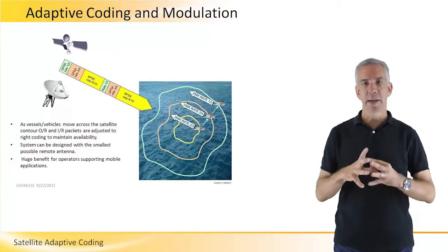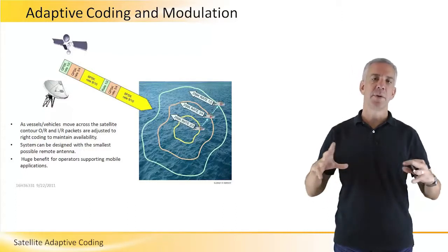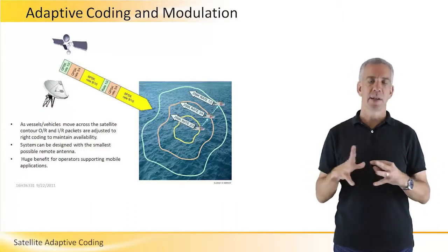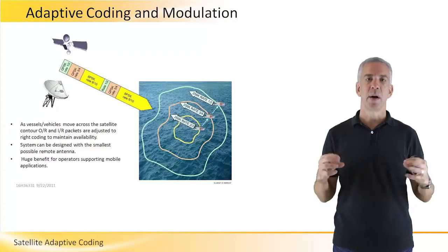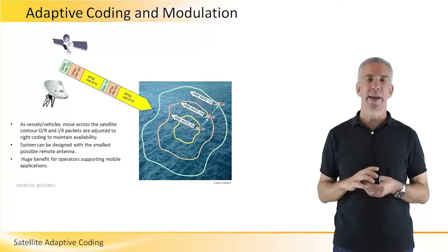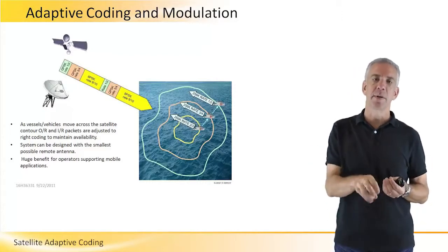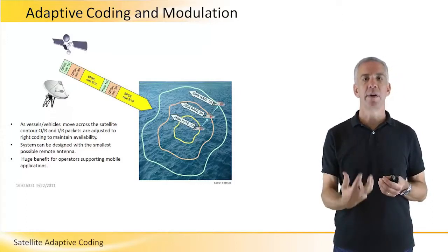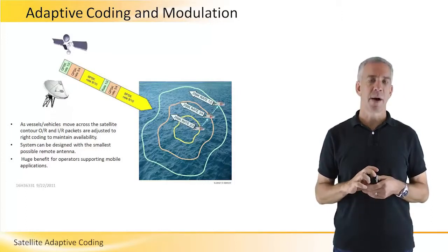This is important because if you consider the satellite footprint, it's much like any typical wireless communication system. In the center of the footprint, the signal is very strong, and we can use a very efficient mod code.